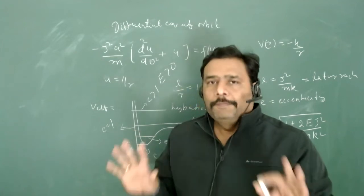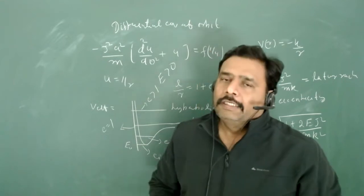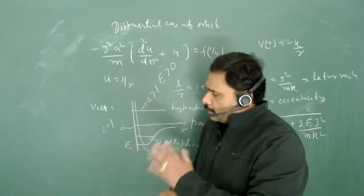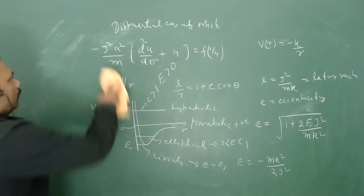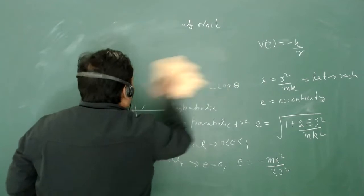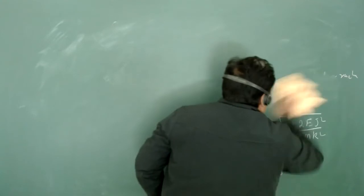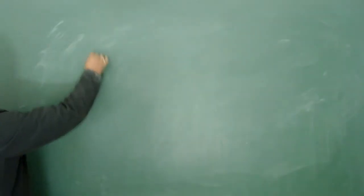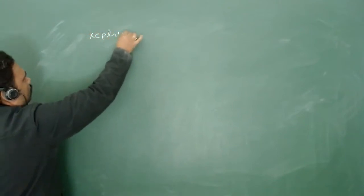Now give special focus to the elliptical orbit, that is Kepler's three laws. Let's go through what Kepler's three laws are and which parts to focus on most efficiently.